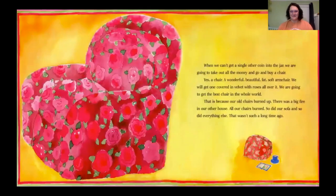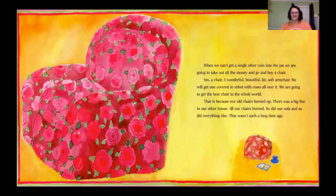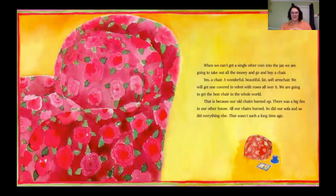When we can't get a single other coin into the jar, we are going to take out all the money and go buy a chair — a wonderful, beautiful, fat, soft armchair covered in velvet with roses all over it. We are going to get the best chair in the whole world. That is because our old chairs burned up. There was a big fire in our other house — all our chairs burned, so did our sofa and everything else. That wasn't such a long time ago.